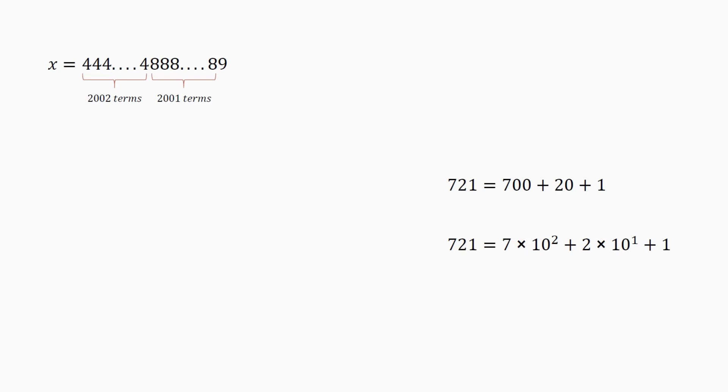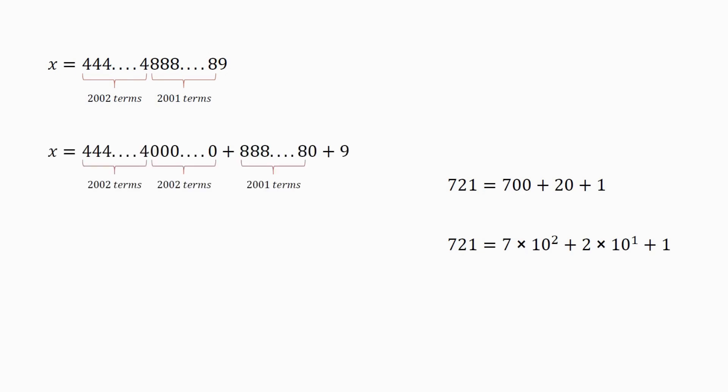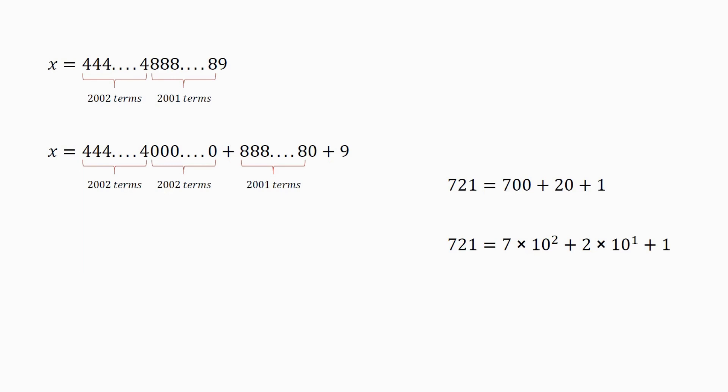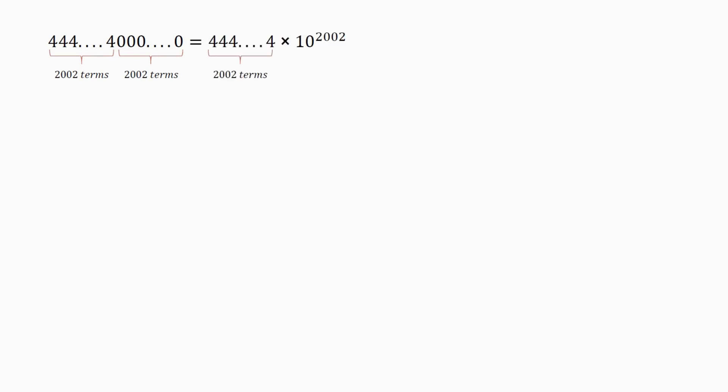Now come back to x. We can split x into 3 parts. Then x equals 2002 4s followed by 2002 0s, plus 2008 followed by 0, plus 9. We can see that x has 3 different sections, so we can solve each section one by one. We start with section one: 2002 4s followed by 2002 0s, which can be written as 2002 4s into 10 to the power of 2002.